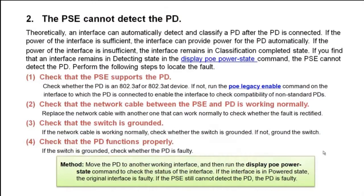If the PD cannot be powered after PoE is available and enabled, you need to check whether the PSE has detected the PD. Theoretically, an interface can automatically detect and classify a PD after the PD is connected. If the power of the interface is sufficient, it can provide power to the PD automatically. If the power is insufficient, the interface remains in classification completed state. If you find that an interface remains in detecting state in the display PoE power state command output, the PSE cannot detect the PD.